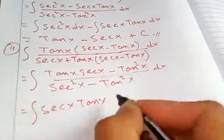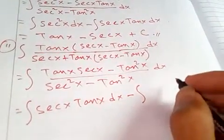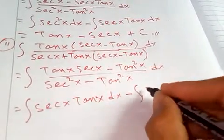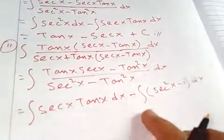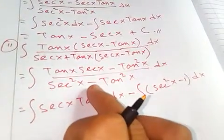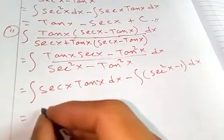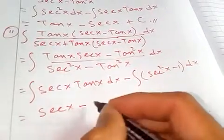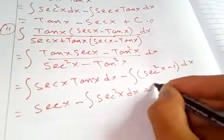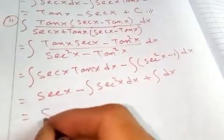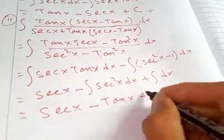Taking the integrals separately: integral of secant x tangent x minus integral of tangent squared x. We rewrite tangent squared x as secant squared x minus one, so we get: integral of secant x tangent x dx minus integral of secant squared x dx plus integral of dx. This gives secant x minus tangent x plus x plus C.